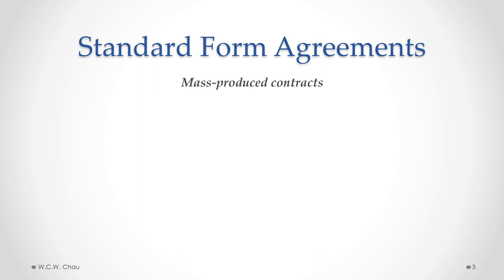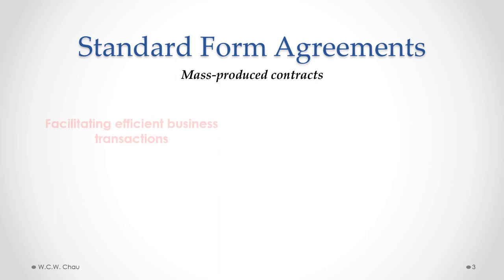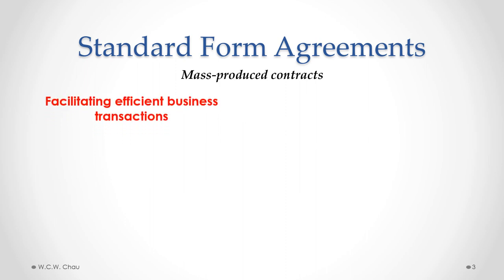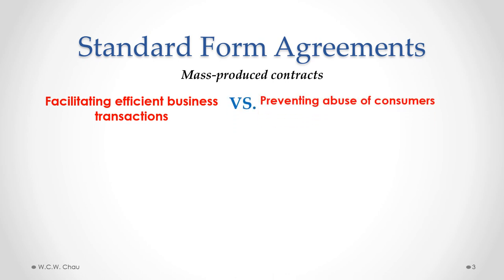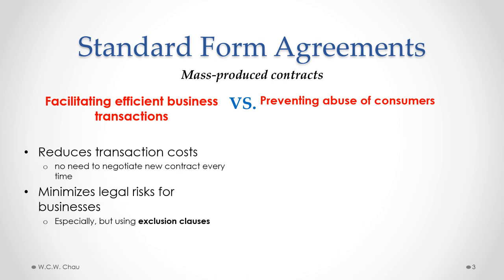Standard Form Agreements are mass-produced contracts for repetitive transactions. Businesses use these agreements to facilitate efficient business transactions by reducing transaction costs — there's no need to negotiate a brand new contract for every single transaction. These standard agreements also minimize legal risks for businesses, ensuring that every contract is properly drafted and includes important clauses such as exclusion clauses, which help limit and control the legal liability of the business.